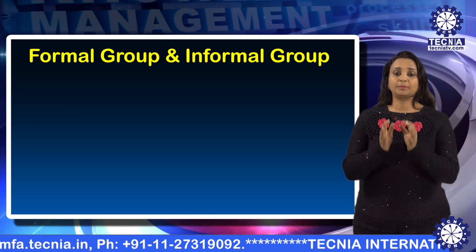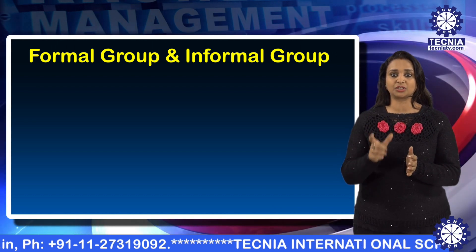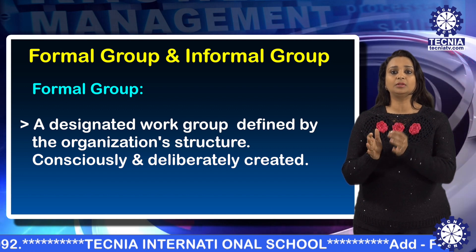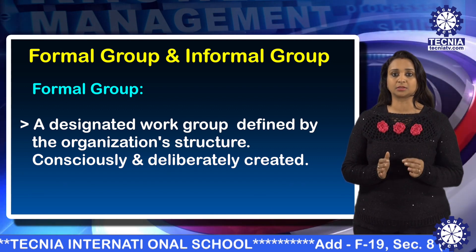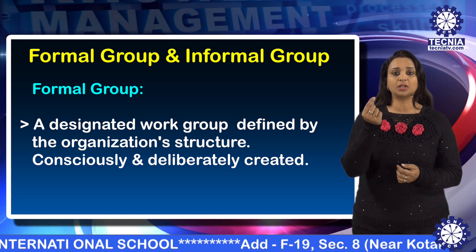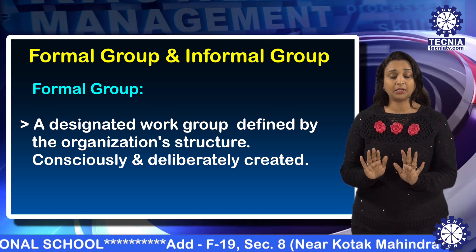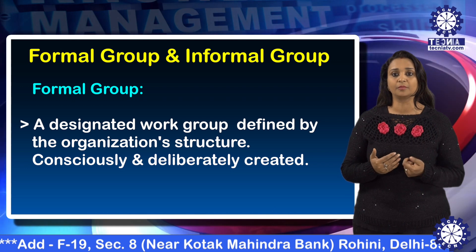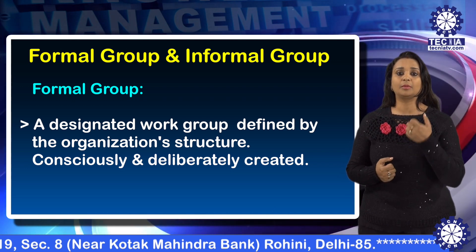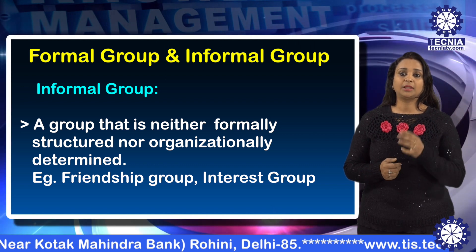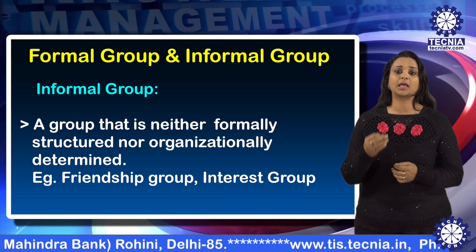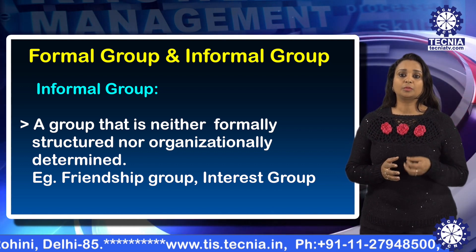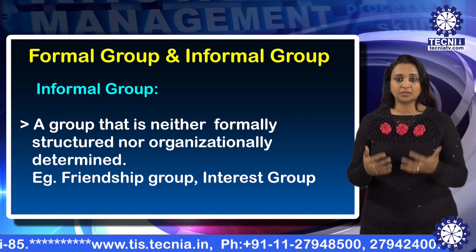Let's discuss the features of each group. Number one is formal and informal groups, classified on the basis of the structure of these groups. Formal groups are created and maintained to fulfill specific needs or tasks related to the total organizational mission. They are consciously and deliberately created, and have a particular set of objectives to be achieved — like board of directors and management committees.